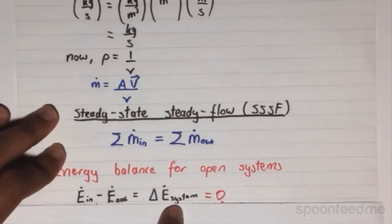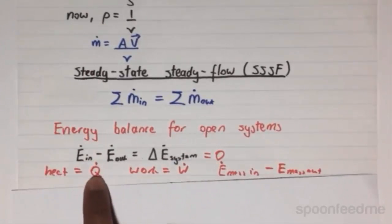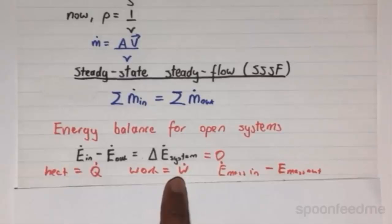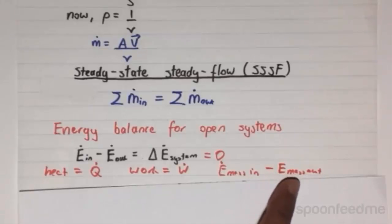The flow of energy in an open system are of three types. There is the flow of heat, which is given as Q̇. The flow of work, which is given as Ẇ. And finally, there is the energy that is contained by the mass flow, which will be the flow of energy of the mass in minus the flow of energy of the mass out.